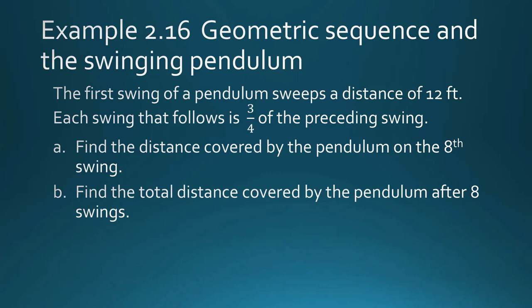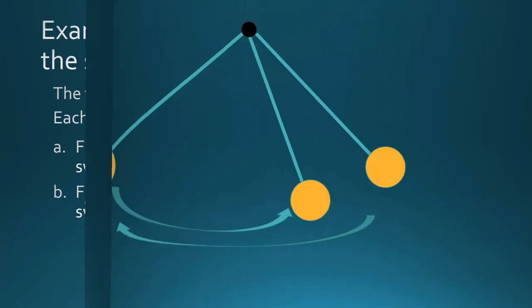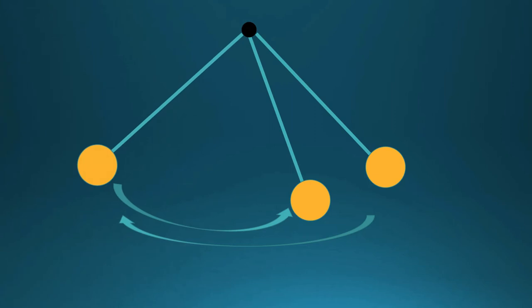So the Swinging Pendulum Problem is modeled by a geometric sequence. And why is that so? Well, let us show it. So let's say, for example, we have a pendulum, a swinging pendulum. So this is the starting point, and you will release the pendulum.